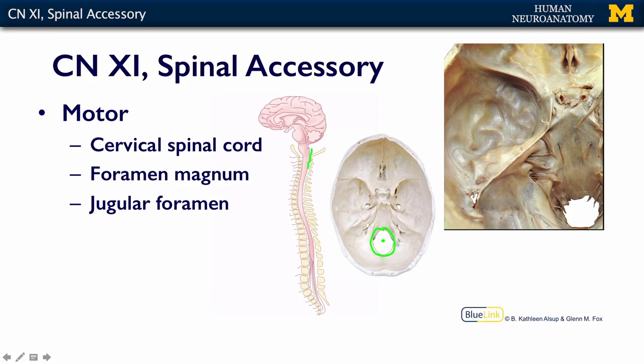Once they come up through the foramen magnum, they turn laterally and then exit. Here's the foramen magnum, here's the spinal accessory nerve coming in this way, and then it joins with nine and ten to exit through the jugular foramen, exits out the base of the skull through the jugular foramen, and then comes around to innervate the sternocleidomastoid and the trapezius. So it's kind of weird — it doesn't have any cell bodies that live in the brainstem; it's all in the spinal cord.